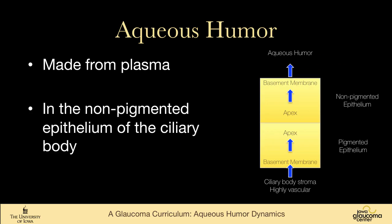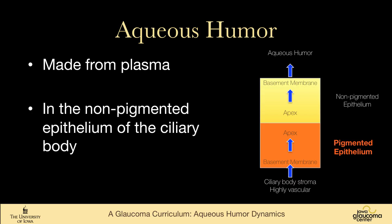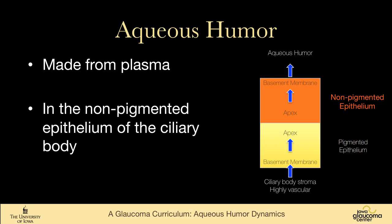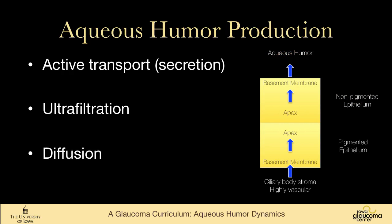Aqueous humor is made from plasma, and it's made by the non-pigmented epithelium of the ciliary body. The process starts in the stroma of the ciliary body, where there's very abundant vascular supply with fairly leaky vessels that provides lots of plasma. It moves into the pigmented epithelium, and from there into the non-pigmented epithelium. Notice that the epithelial cells are apex to apex, with the basement membrane on the outside of both cells. From there it becomes part of the aqueous humor. There are three basic mechanisms by which this occurs: active transport, ultrafiltration, and diffusion.